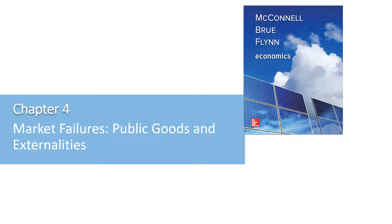Hi everyone. In chapter 4 we are going to be looking at market failures and the consequences of market failures. We're going to begin by looking at demand-side market failures, then supply-side market failures, and the inefficiencies caused by these failures. Then we're going to describe and show consumer and producer surplus. We're going to define what a private good is and a public good, and that's where we're going to wrap up today's discussion.